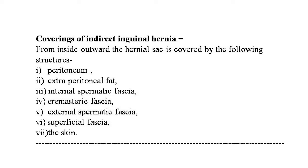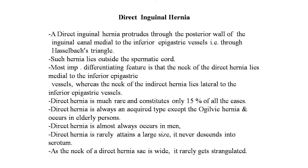Now the coverings of the indirect inguinal hernia from inside to outside: the hernia sac is covered by the following structures — peritoneum, extraperitoneal fat, internal spermatic fascia, cremasteric fascia, external spermatic fascia, superficial fascia, and the skin.